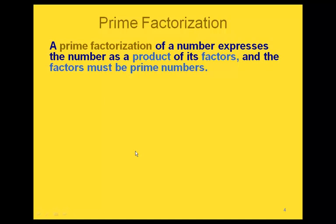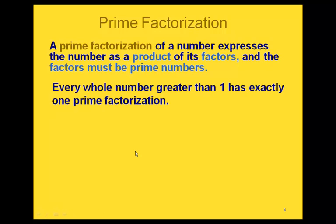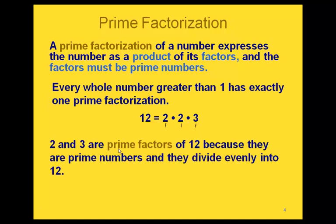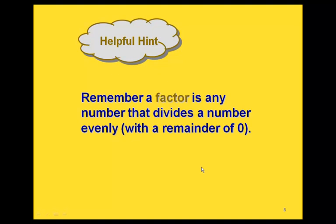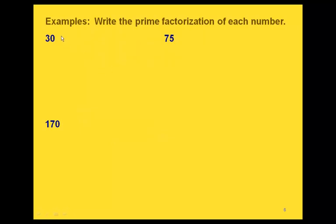When we talk about the prime factorization of a number, this means we're expressing the number as a product of its factors, and those factors must be prime numbers. Every whole number greater than 1 has just one prime factorization. For example, if we take the number 12, we can write its prime factorization as 2 times 2 times 3. Notice that 2, 2, and 3 are all prime, so 2 and 3 are prime factors of 12. Remember that a factor is any number that divides a number evenly — if you divide 12 by 2, you get a remainder of 0.